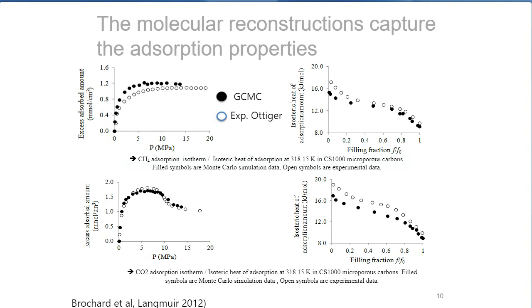On the right, you can see the heat of adsorption as measured from adiabatic calorimetry — the energy released to the outside because adsorption is exothermic each time a molecule enters the system. At a filling fraction of zero, it's really probing the deepest site: when one single methane or CO2 molecule enters the pores, it reflects the deepest energy site in the system. For methane, the heat of adsorption is in the range of 18–20 kJ/mol — way more than the heat of liquefaction of methane. The same for CO2.